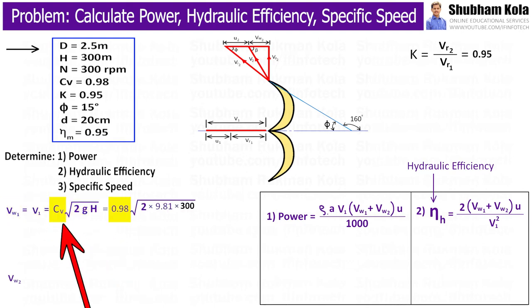Where Cv is the coefficient of velocity given in the problem, and H is 300m, i.e. net head, which has provided in given data. And the numerical value for acceleration of gravity, small g, is 9.81 m per second square.